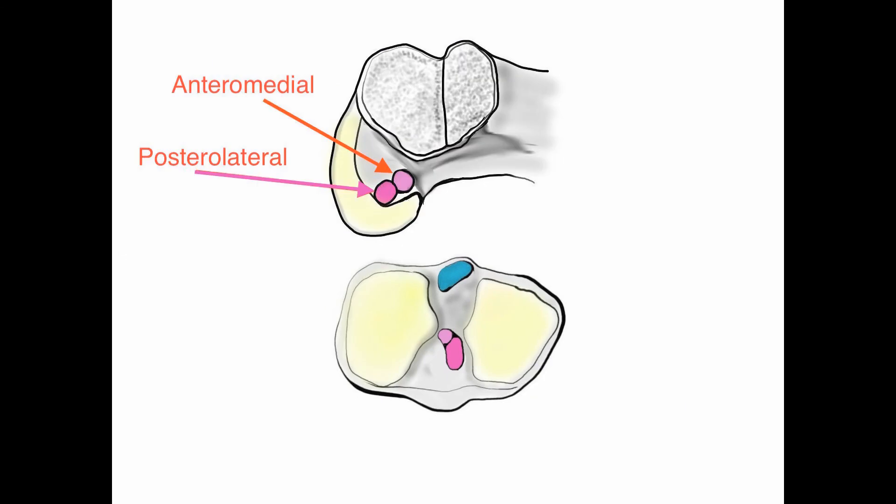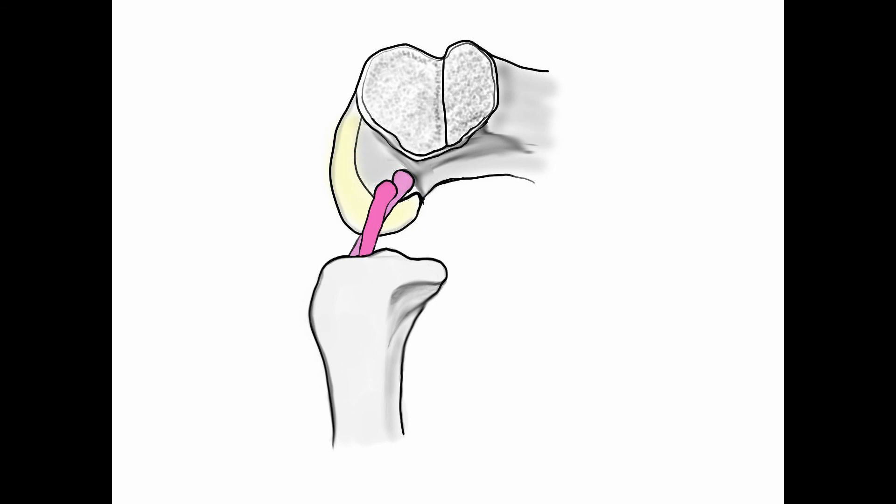Rotating the femur and looking from the inside or medial side and cutting away some of the bone, we see how the posterior lateral bundle inserts ahead of the anterior medial bundle along the intercondylar groove. If we rotate the tibia into the same view and add the whole ACL, we can see how it runs in its entirety.